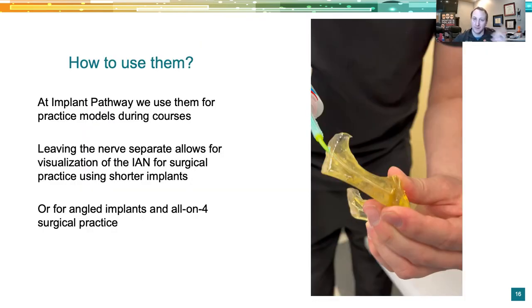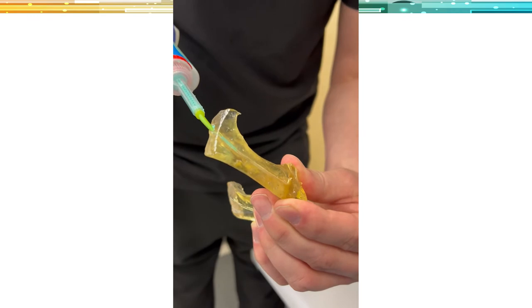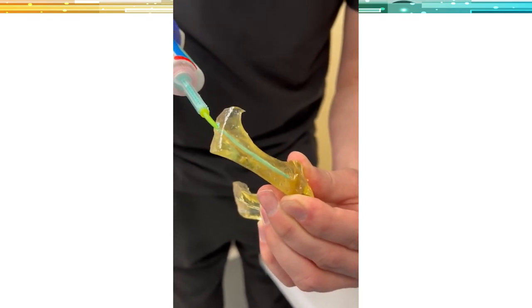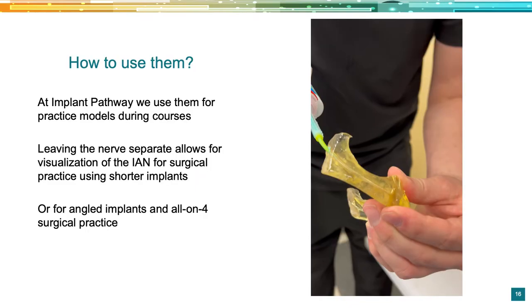At Implant Pathway, we use these anatomical models all the time for our surgical hands-ons. We segment the nerve out and ask the lab to remove it, making it easy. We print some models in clear resins so during the hands-on we can actually see the nerve. I'll sometimes inject the nerve canal with polyvinyl siloxane light body so we can see it even better. That way as we're doing our model surgery, we can watch the nerve right there.